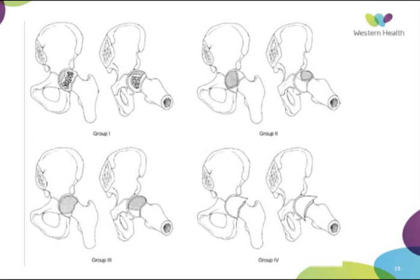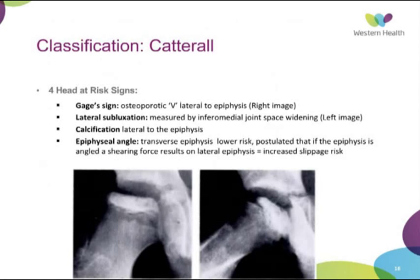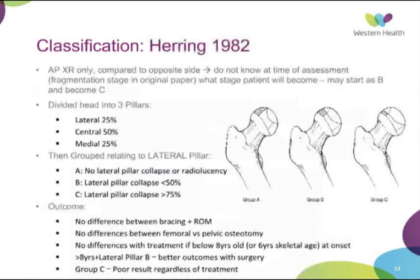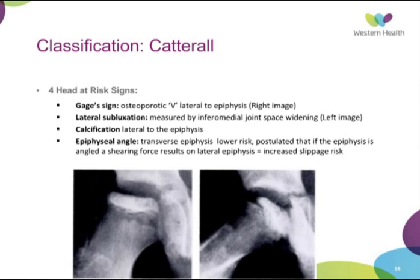Significantly, Catterall described four head-at-risk signs associated with poor outcomes. These include: the Gage sign — an osteoporotic V just lateral to the epiphysis; lateral subluxation with widened inferomedial joint space; and the epiphyseal angle. If the epiphysis is transverse it undergoes less shearing stress and has a better outcome than a vertical epiphysis, since walking places increased shearing force on the head.